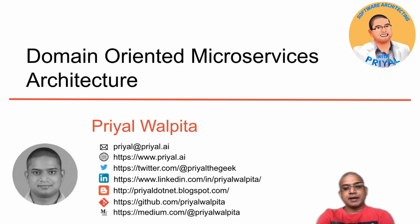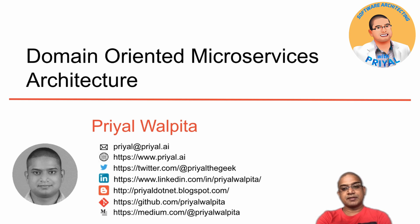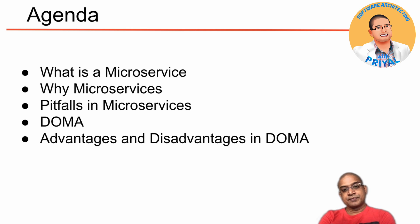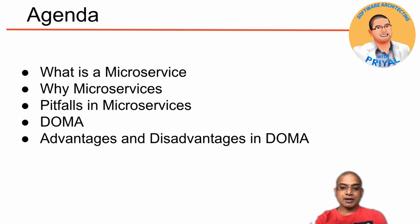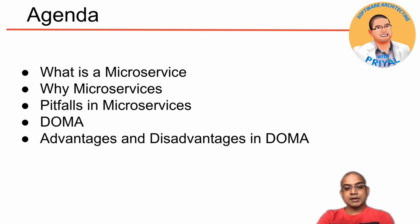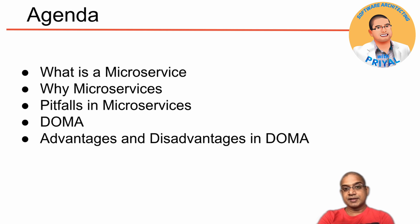Hi guys, welcome. In today's session we are going to talk about what is a domain oriented microservices architecture. The main areas we will cover are: what microservices are, where we can use them, some disadvantages of existing microservices architectures, and then we will move into DOMA — the domain oriented microservices — with a brief introduction and how we can use this concept.